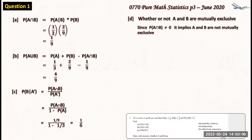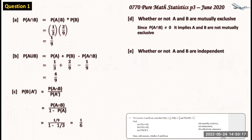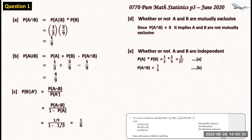For part (e), we check whether A and B are independent. For independent events, P(A∩B) = P(A) × P(B). Here P(A) × P(B) = one third times two over nine, which equals two over twenty-seven. However, P(A∩B) as calculated earlier is one over nine. These two values are not the same, so we cannot conclude that the events are independent — A and B are not independent.